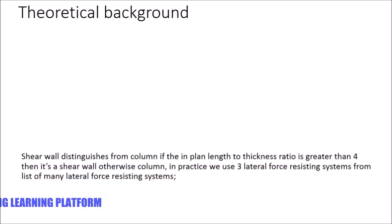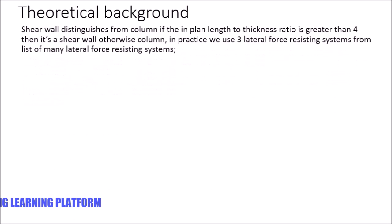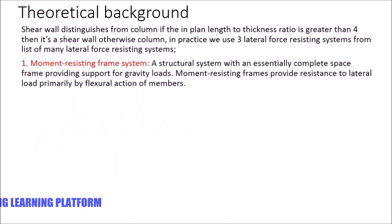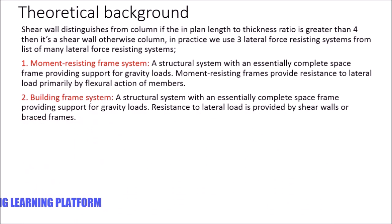For the theoretical background: a shear wall is distinguished from a column in that if the dimension length-to-thickness ratio is greater than 4, then it is a shear wall; otherwise it is a column. In practice there are three lateral force resisting types. The first is the moment resisting frame, which is a structural system with a complete space frame for gravity loads and a moment resisting frame supporting lateral loads.